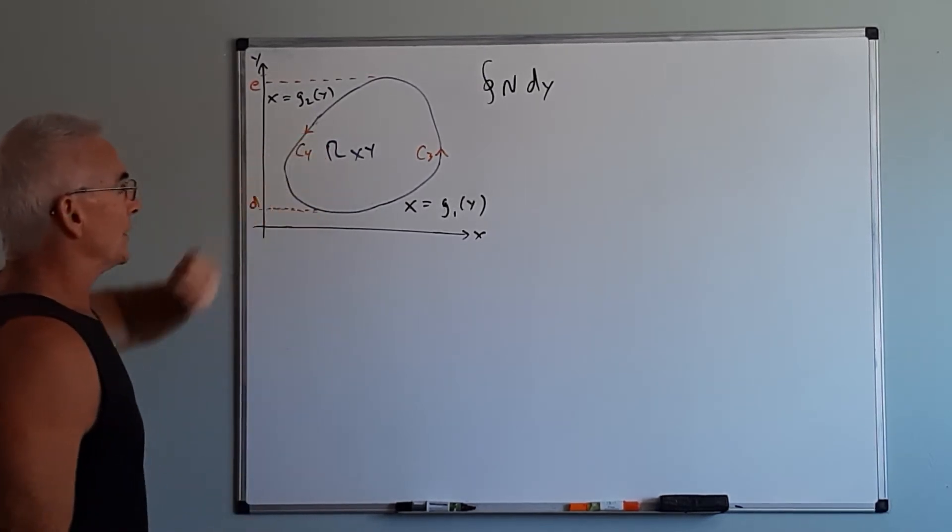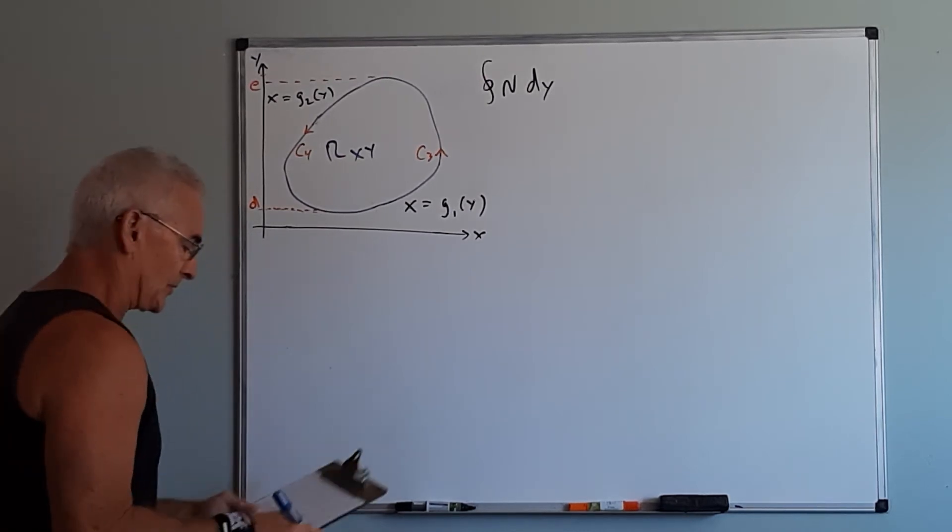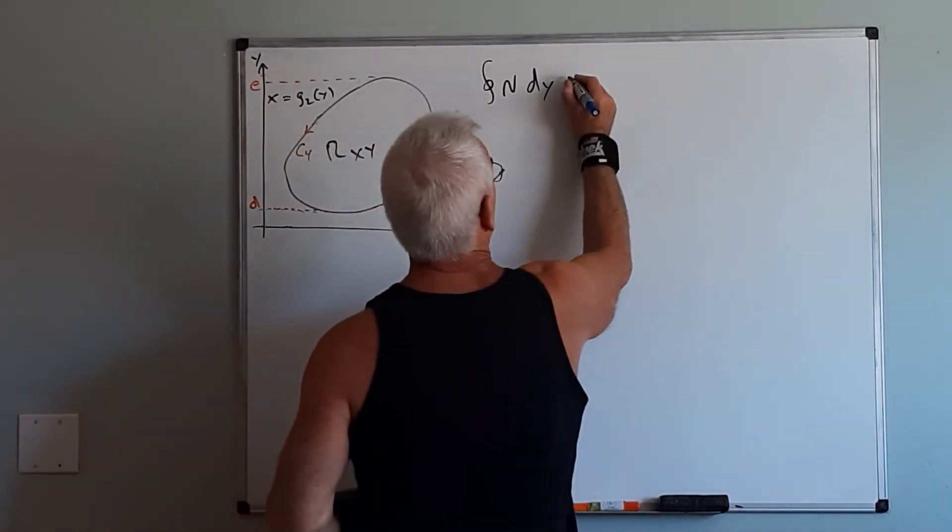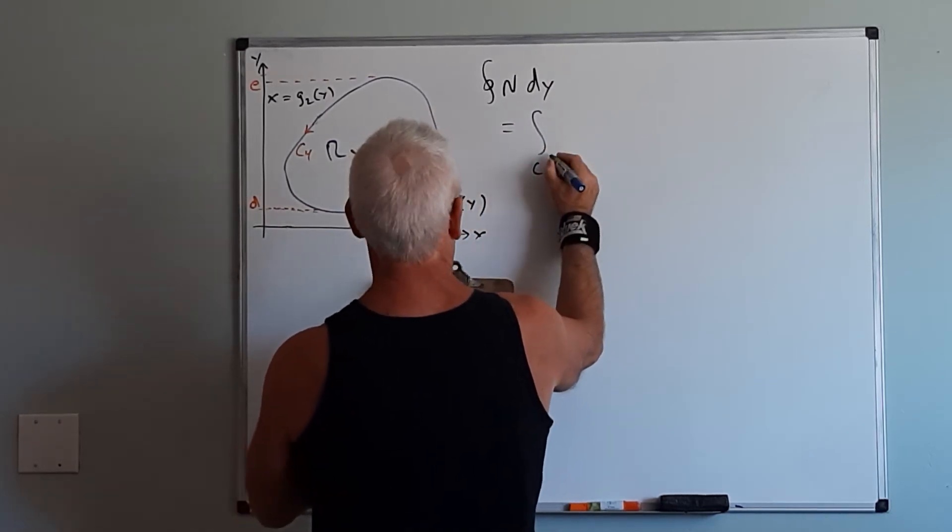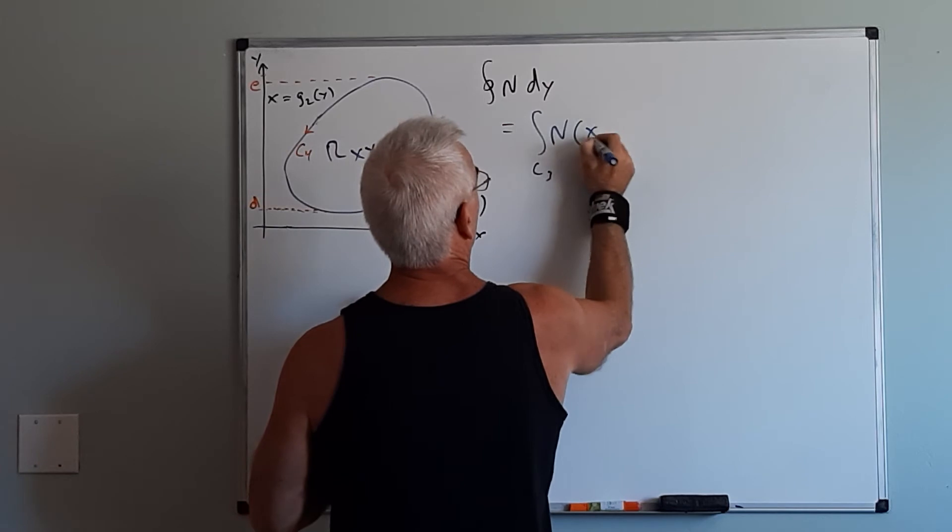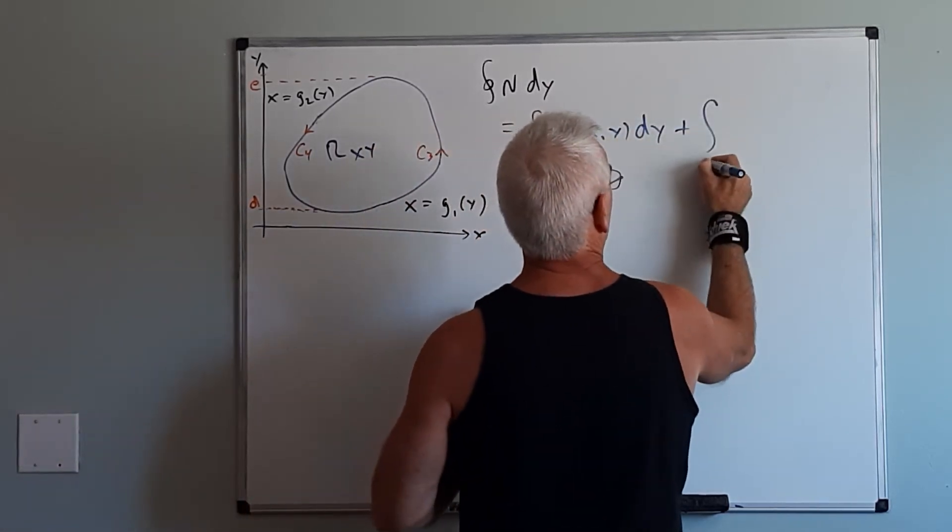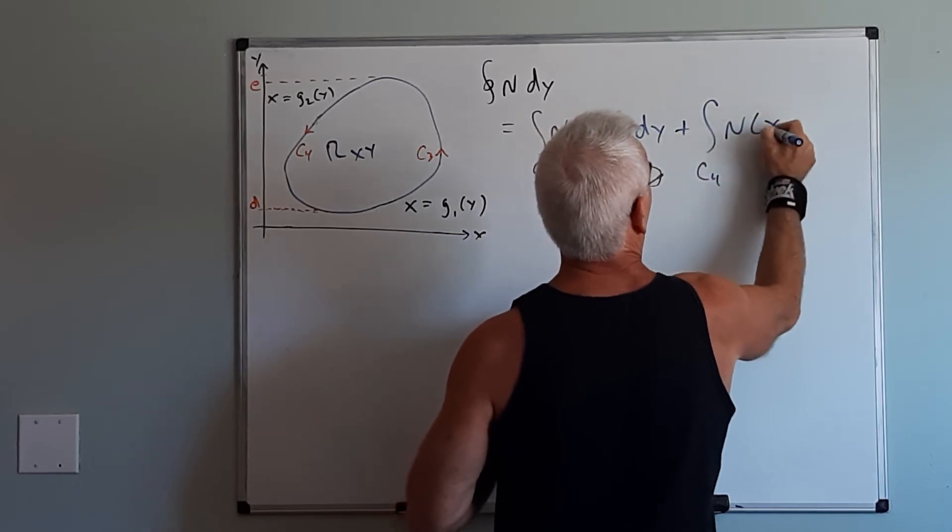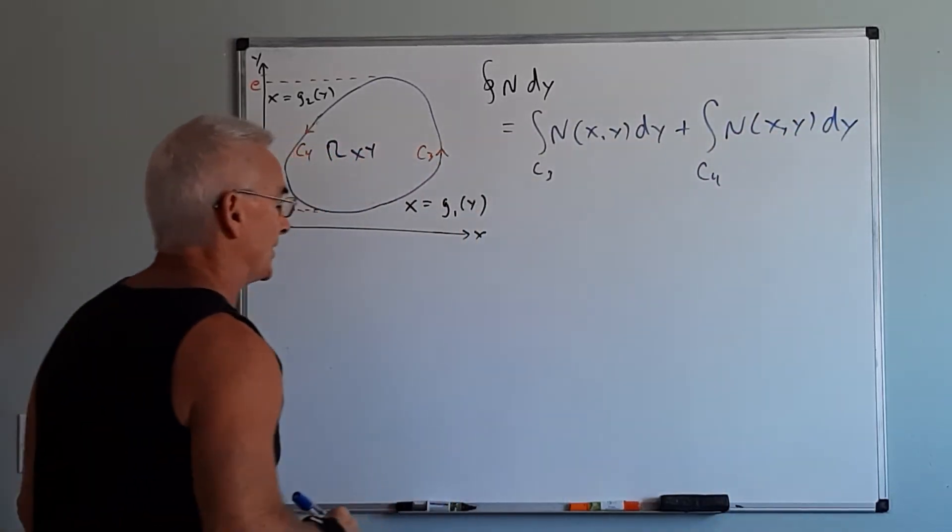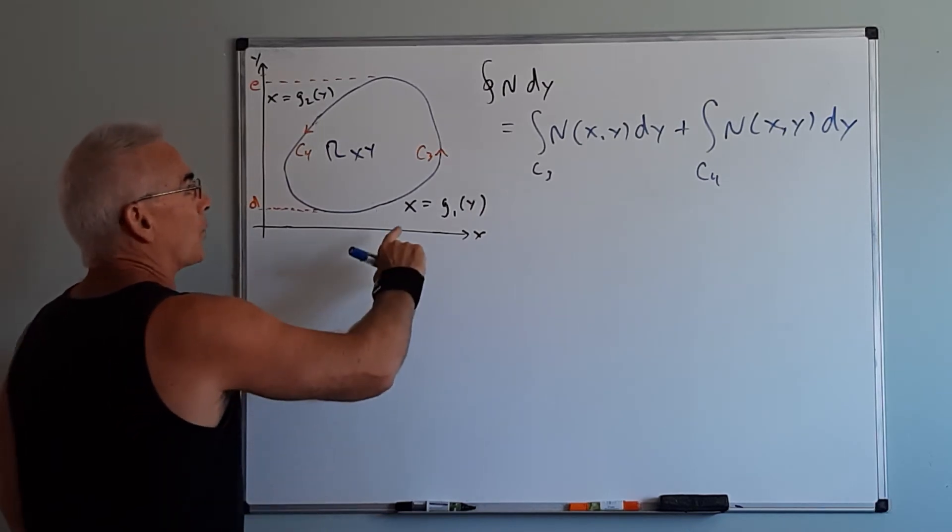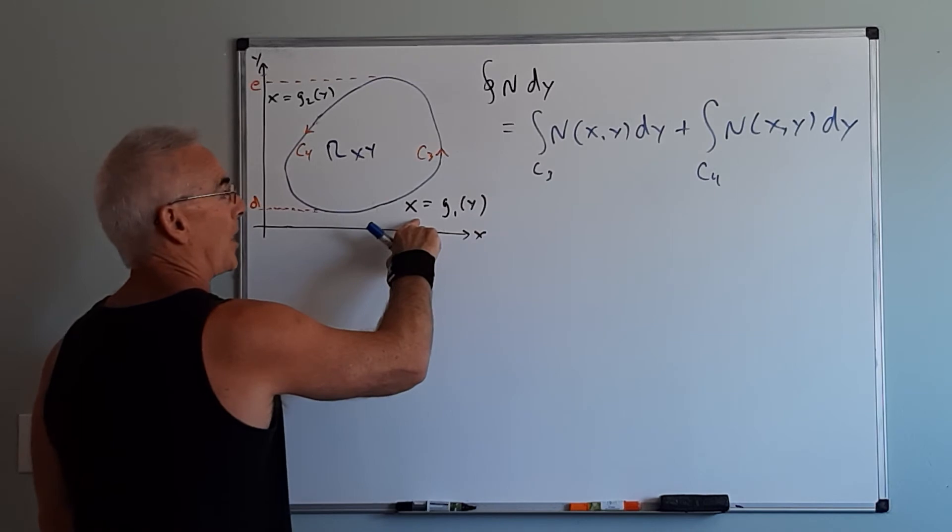So we know that the region is the same but now the setup is going to be a bit different. When I set this problem up this is going to equal the integral over c3 of n of x,y dy plus c4 of n of x,y dy. Now very similar to what we did a moment ago, this time we're going to replace the x's with the functions of y here.